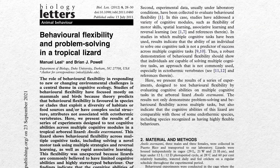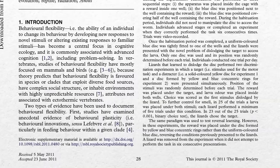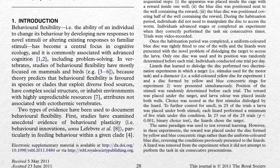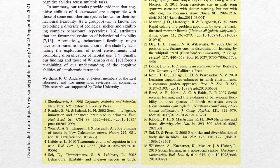Now let's look at another interesting example — a paper on behavioral flexibility and problem solving in a tropical lizard. Let's go to the body of the paper and see the citation. Is there a citation at all? Yes, there is a citation, but it looks very different — citation is represented here by numbers, such as 1, 2, 3, 6, 7. Now let's look at the reference by going all the way down. The reference list starts with numbers that coincide with the numbers in the body — for example, number 18 in the body and number 18 in the reference are the same.